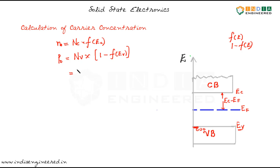Now we can substitute for F of Ev, that is Nv into 1 minus 1 by 1 plus e power Ev minus Ef by kt.